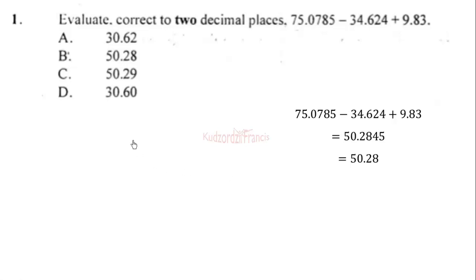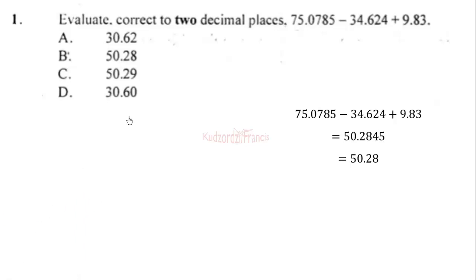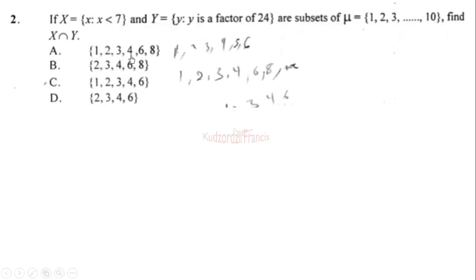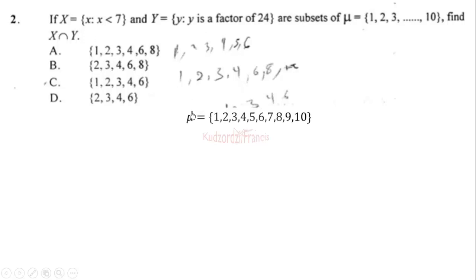That is option B. Now let's look at question two. If X equals {x : x < 7} and Y equals {y : y is a factor of 24}, and the universal set mu equals {1, 2, 3, ... up to 10}, find X intersection Y. The universal set has these elements, and the set X also has these elements.